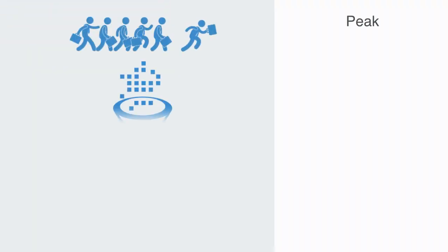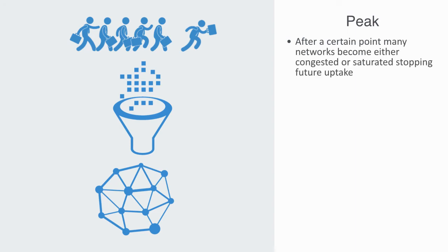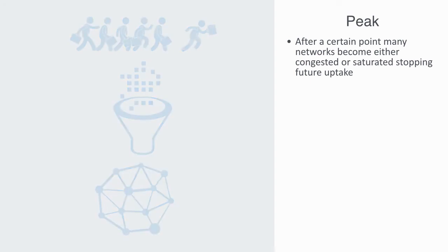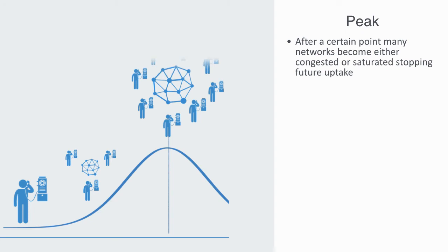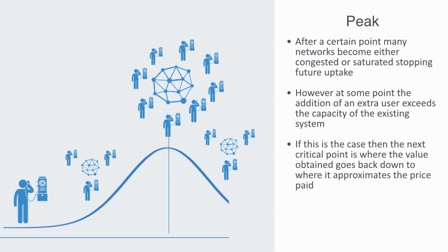The bandwagon effect can lead to overcapacity, as the increasing number of users generally can't continue indefinitely. After a certain point, many networks become either congested or saturated, stopping future uptake. Congestion occurs due to overuse. As an example, we might think about the telephone network: while the number of users is below the congestion point, each additional user adds additional value to every other customer. However, at some point, the addition of an extra user exceeds the capacity of the existing system. At this point, each additional user decreases the value obtained by every other user. The next critical point is where the value obtained goes back down to where it approximates the price again. The network will cease to grow at this point and the system must be enlarged to enable future growth.